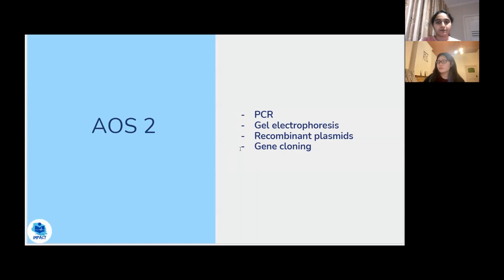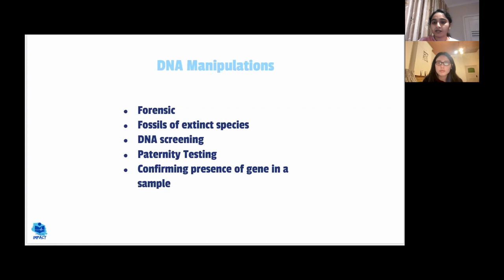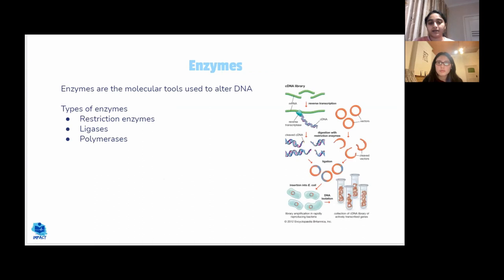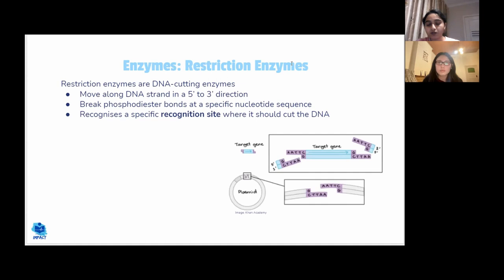Welcome back for area of study two of unit four, covering PCR, gel electrophoresis, recombinant plasmids, gene cloning and their implications for society, antibiotics, antivirals, and GMOs. Starting with DNA manipulations: enzymes play a crucial role in all these processes. Restriction enzymes can be considered molecular scissors that cut DNA at specific recognition sites, allowing us to target a gene of interest rather than working with the entire genome.